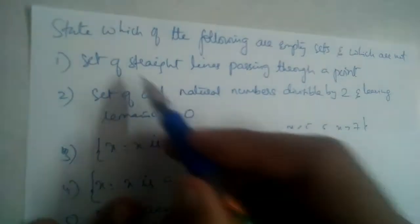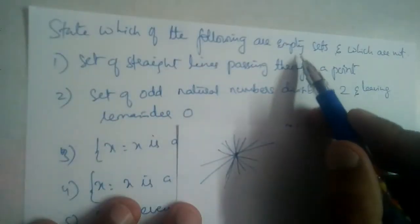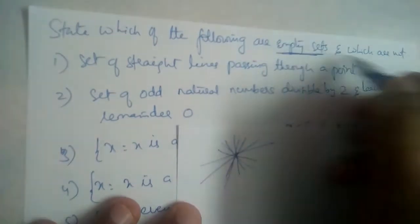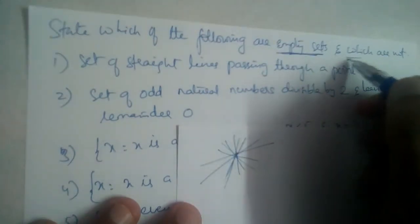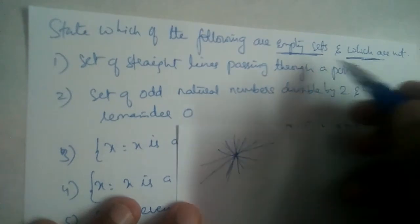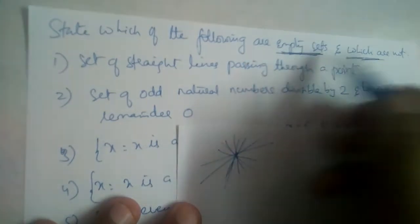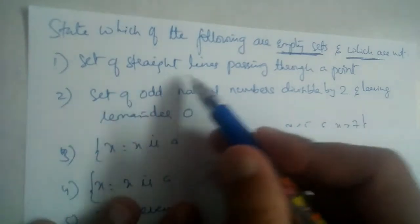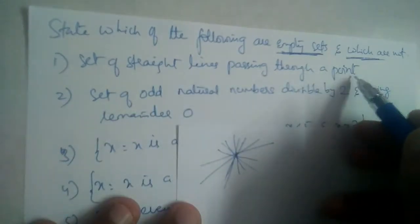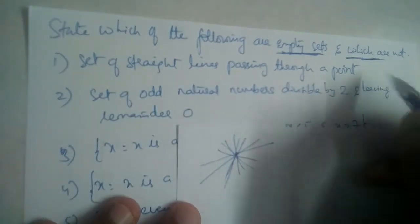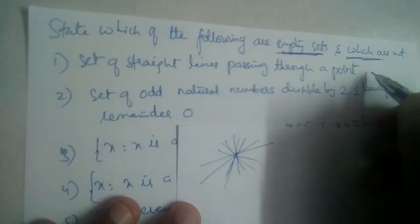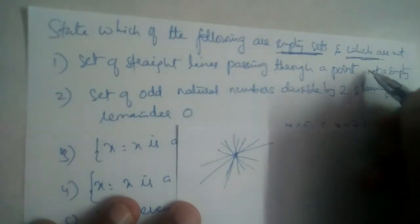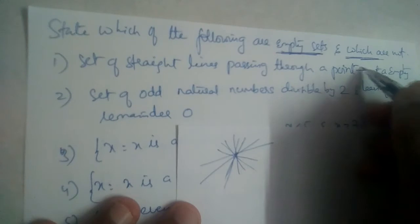So is it an empty set? No, it is not an empty set. We are not checking whether they are finite or infinite — we are checking whether the following are empty or not. The set of straight lines passing through a point is not an empty set.